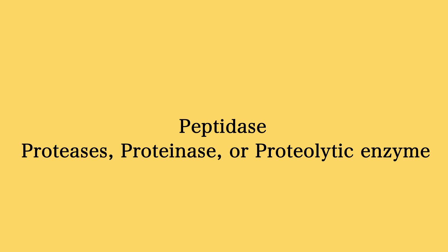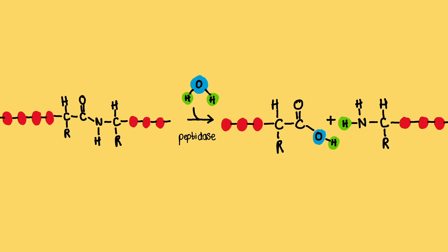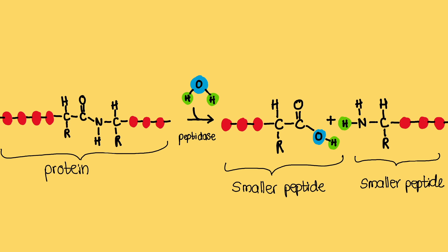Another class of hydrolases are peptidases, which can also be called proteases, proteinases, or proteolytic enzymes. They catalyze the breaking of peptide bonds with the help of water molecules to create smaller peptides, polypeptides, or amino acids. As you can see in the diagram, a long protein chain has one section broken down by the addition of a water molecule to create two shorter peptides.